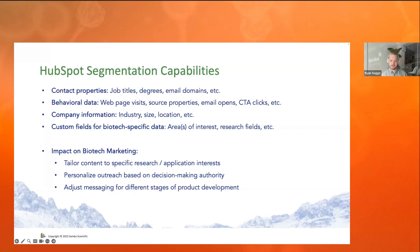You can also look at company data, such as their industry, size, or location. Custom fields are super important for segmentation, and I highly recommend that you test some of these out on your own, such as making a field for area of interest or research field. This can be triggered by their interactions and is super helpful for segmentation beyond the default properties available in HubSpot.